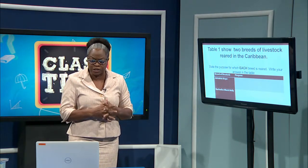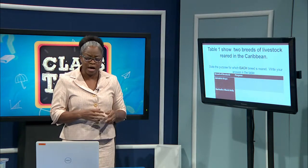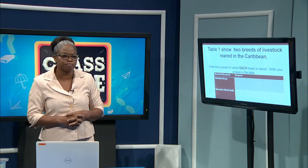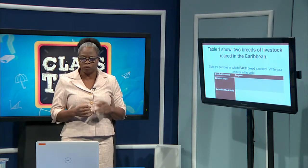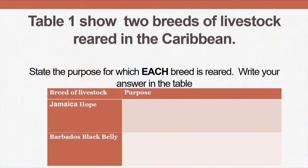Now, students, as we move along, I just want you to note these breeds. Table 1 shows two breeds of livestock in the Caribbean. I want you to state the purposes for which these breeds are used: the Jamaica Hope and the Barbados Black Belly. At the end of the presentation, I hope you have your answers ready so that I'll be able to give you the correct answer as well.